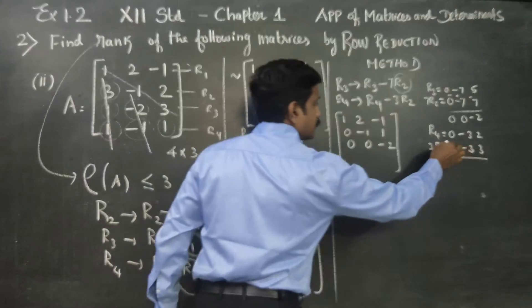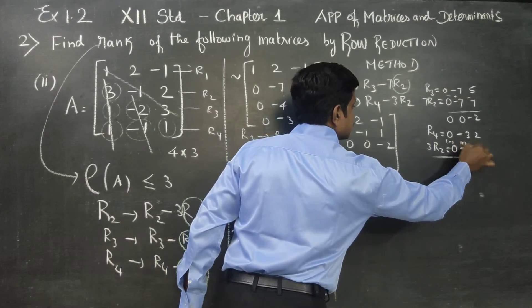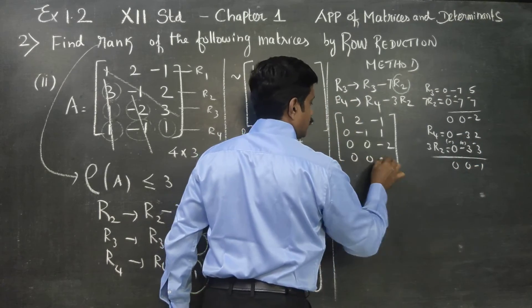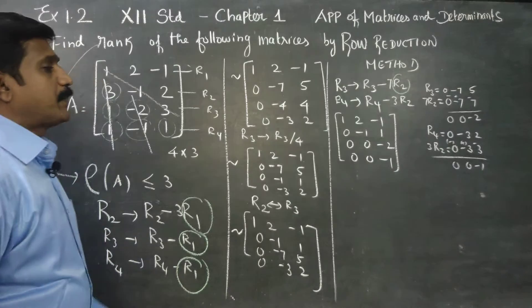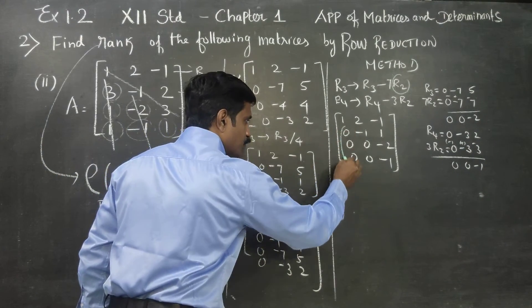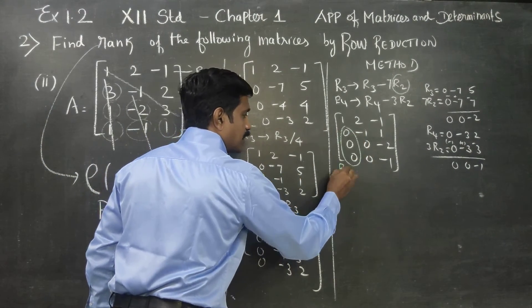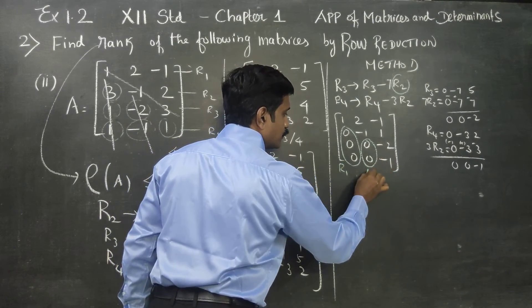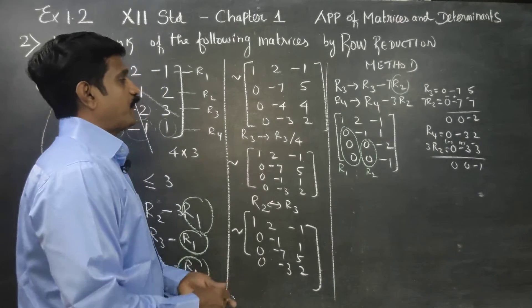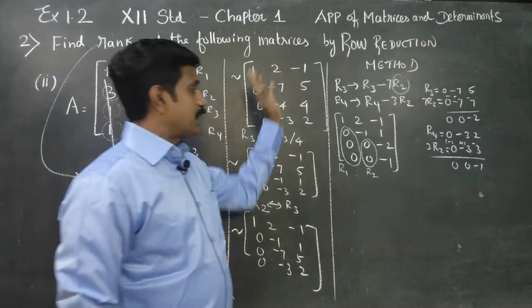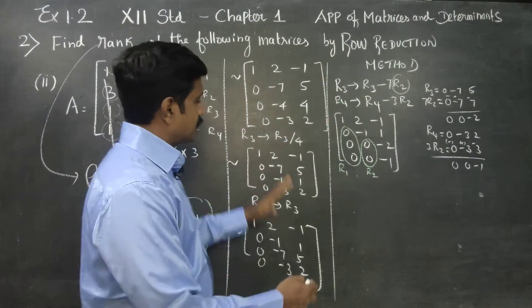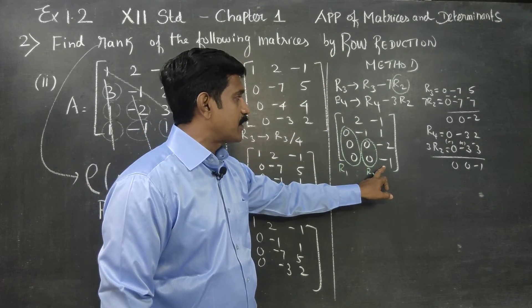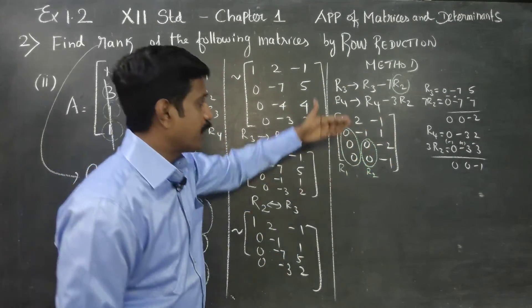Subtraction minus plus minus: 0, 0, minus 1. What is my R4? 0, minus 3, 2. R4 plus 3 times R2 — 0, minus 3, 3. Subtraction: minus plus minus, 0, 0, minus 1. Second stage: R2 help, third stage: R3 help.